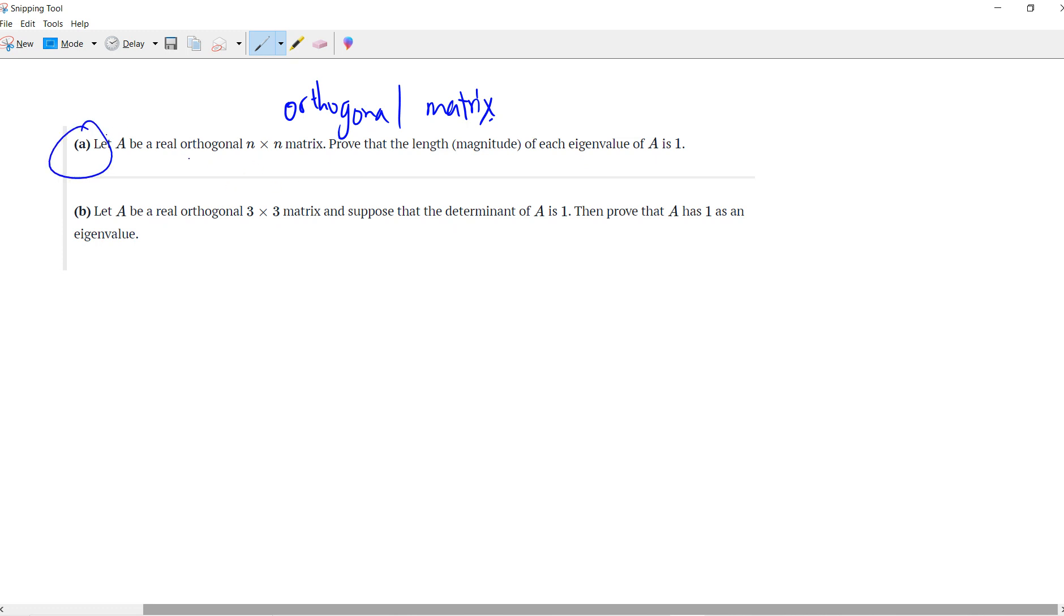The first one: let A be a real matrix which is orthogonal, meaning that A times A transpose is the identity matrix. Prove that the length of each eigenvalue is 1.